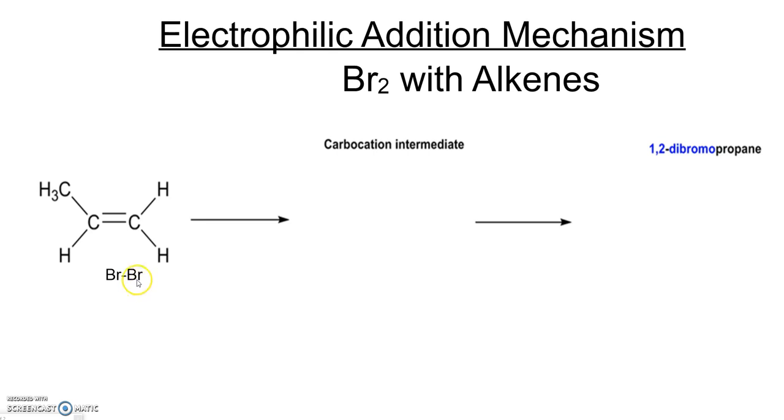I'm just going to make it slightly bigger, slightly easier to draw. So the first thing is that the alkene attacks this bromine atom here and we're breaking the carbon-carbon double bond, the pi bond specifically.